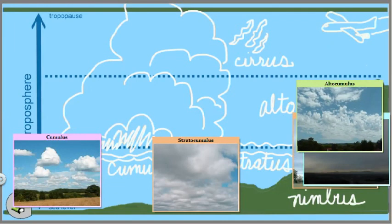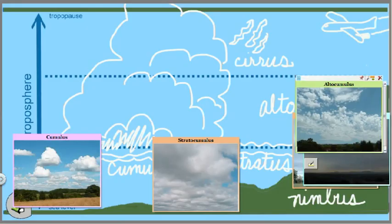In these middle ranges, we have altocumulus clouds. These are still a little bit puffy, like cotton balls, so they're a little bit mound-like. But you can see that they're a little bit higher and look a little bit different than cumulus clouds do.